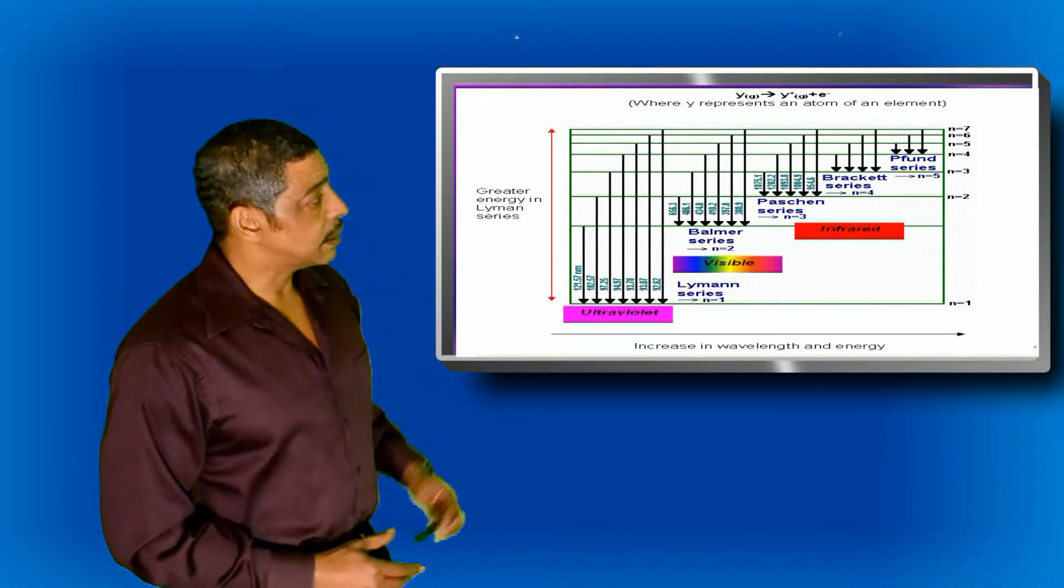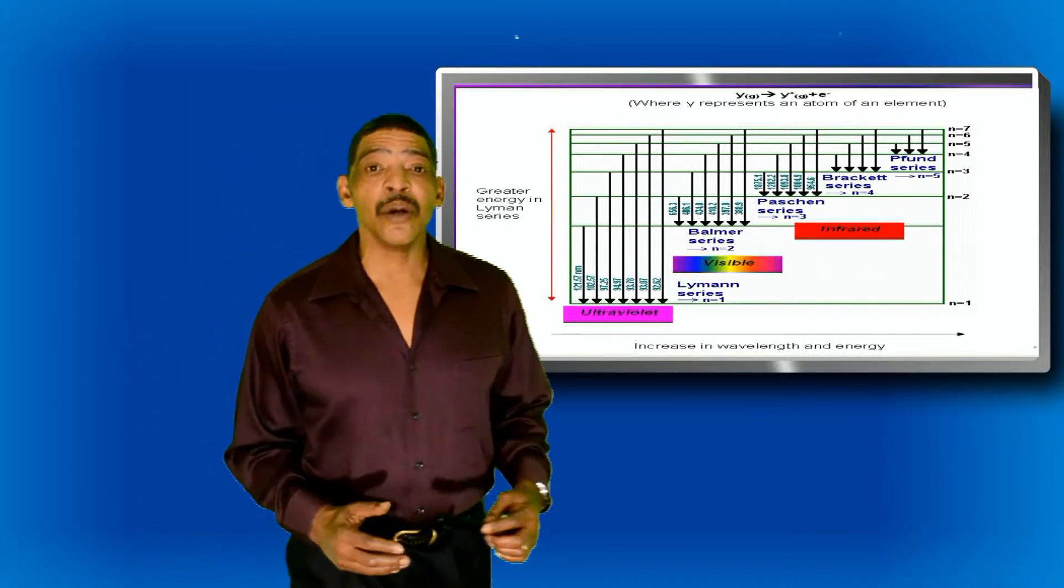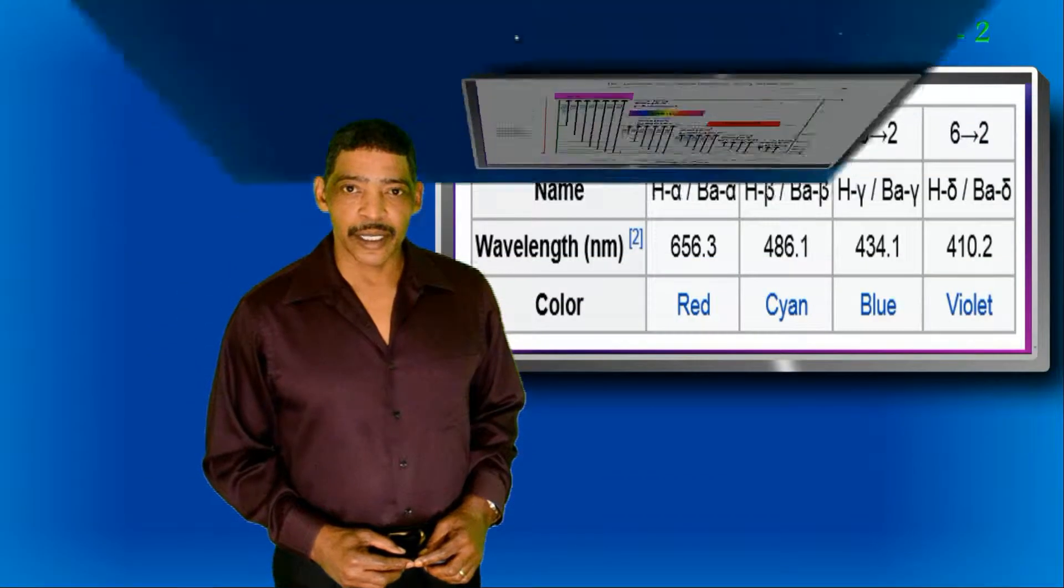Unlike the Lyman, the Bracket, and the Pontian series, the Balmer series is the only series that lie in the visible range.